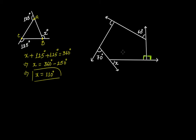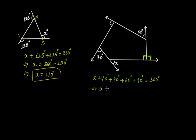For any polygon, the sum of the exterior angles has to be 360 degrees. So x + 70 + 90 + 60 + 90 = 360 degrees. This gives x + 310 = 360, therefore x = 50 degrees.